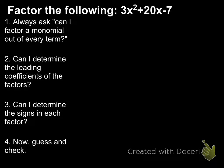Alright, let's try this one. 3x squared plus 20x minus 7. The first thing I check is can I factor anything out of all three terms? No. The answer is no, absolutely not.